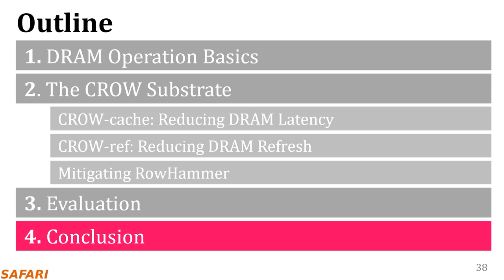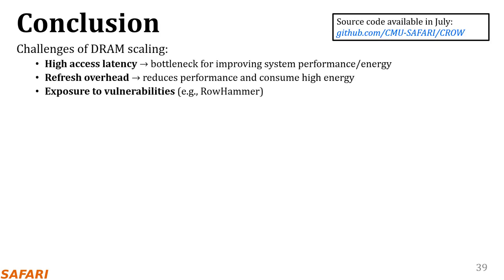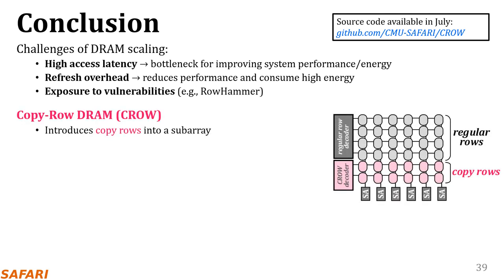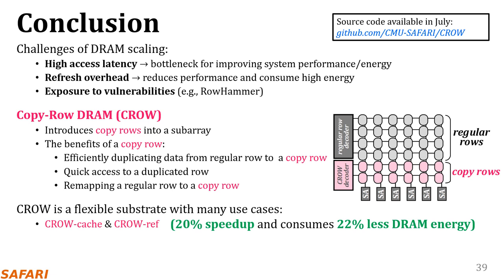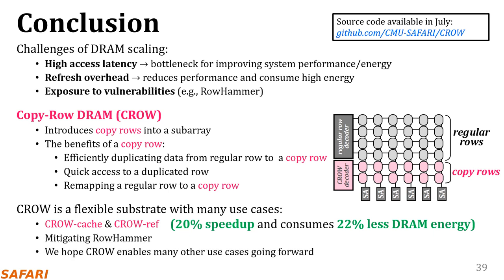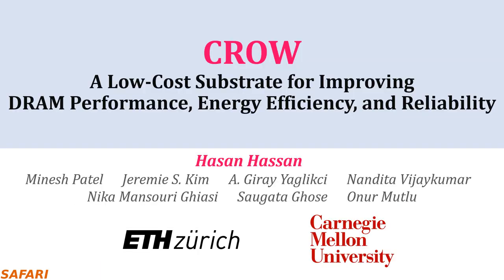Let me quickly conclude. We propose CROW, an in-DRAM substrate for addressing the three key challenges of DRAM scaling. CROW introduces copyrows in addition to regular rows in conventional DRAM, providing three key benefits. Using the CROW substrate, we develop CROW cache to enable in-DRAM caching, CROW ref to mitigate DRAM refresh overhead, and a mechanism for mitigating rowhammer errors. We believe CROW will enable many other use cases going forward. Thanks for your patience — please contact me if you have any questions.